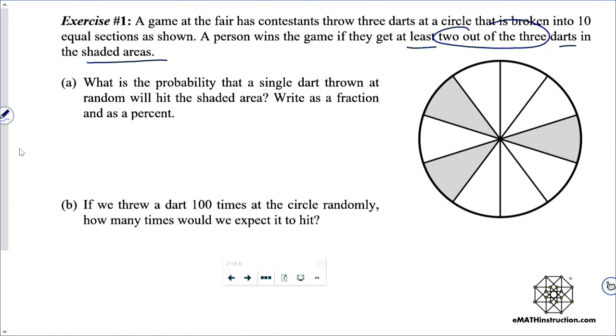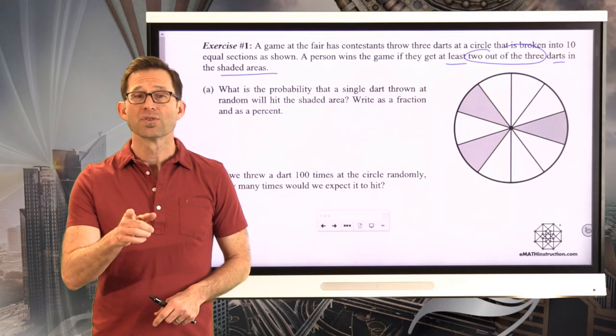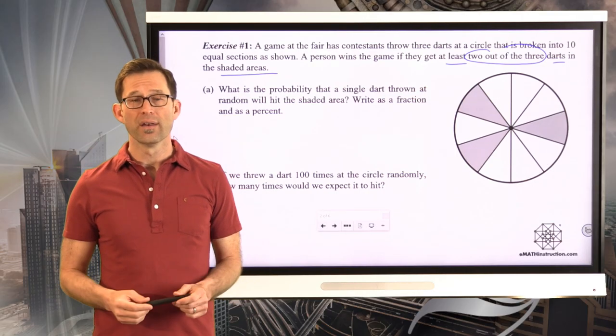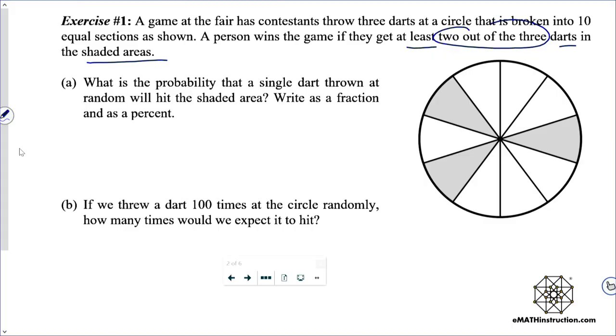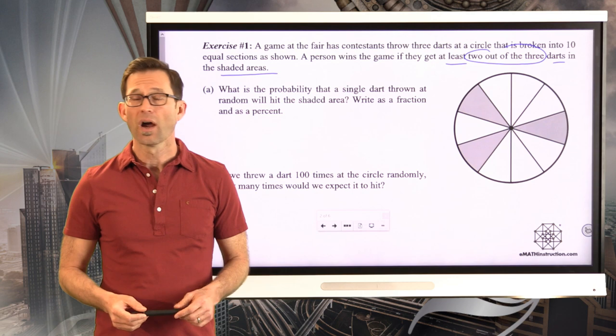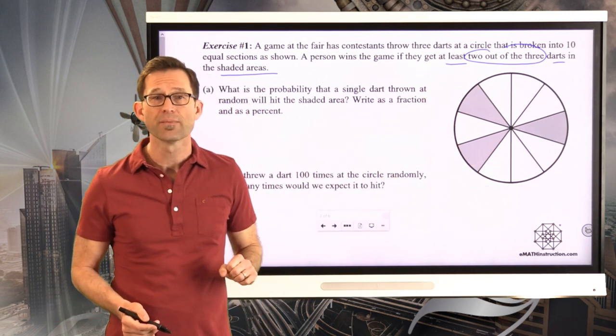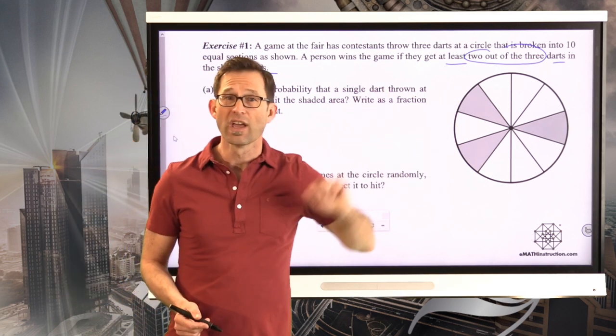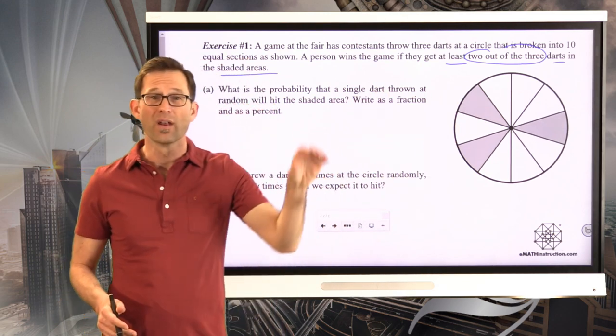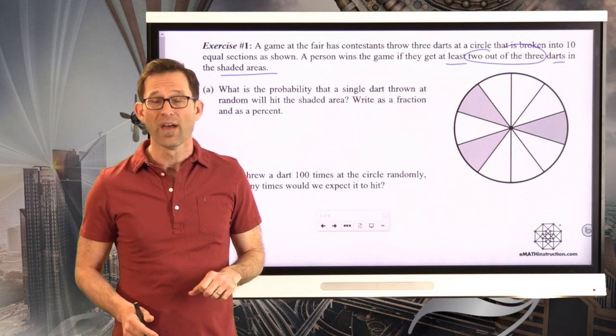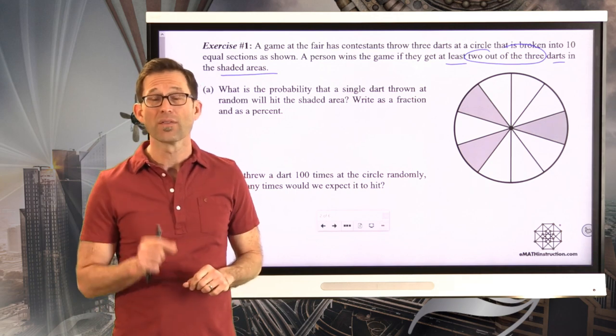So letter A. What is the probability that a single dart thrown at random will hit the shaded area? Write as a fraction and as a percent. This is pretty easy, so I want you to pause the video and go ahead and answer it. Simple enough - there are ten regions, all of the same size. Three of them are shaded, so if we just look at the number of outcomes in our event, which is getting a dart in the shaded region, divided by the total number of equally likely outcomes.